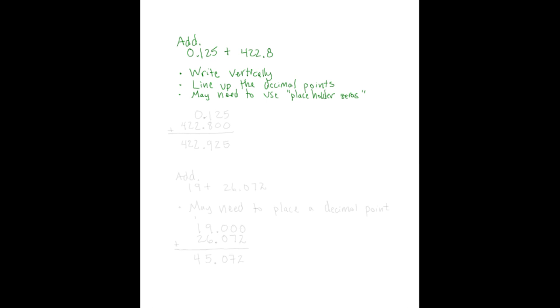We want to add 0.125 and 422.8. So we have 0.125. Below it, we are going to write 422.8. We want to line up the decimal points. So the 8 will go here, and the 422 will go there. We are adding, so I'll draw my line here.